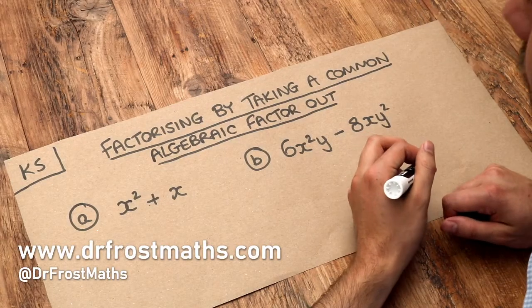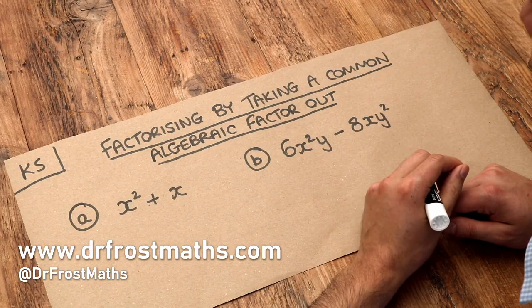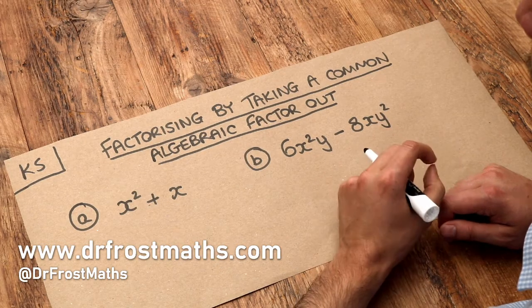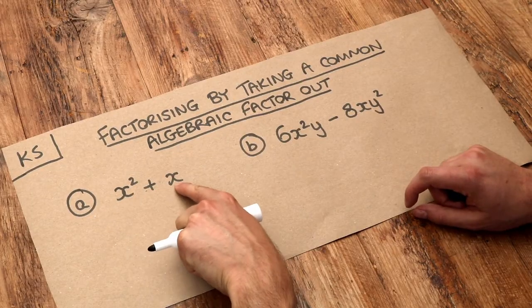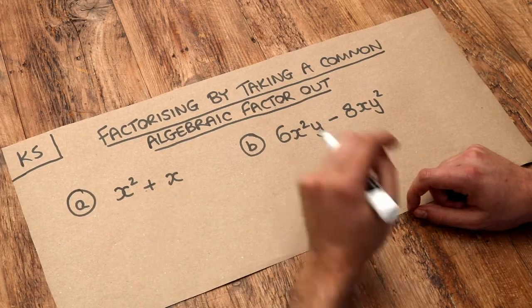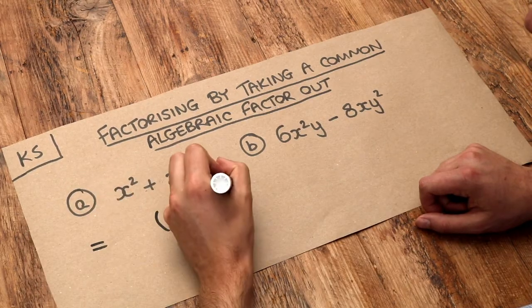Hello and welcome to this Dr Frost Maths key skill video on factorising by taking a common algebraic factor out. In the previous video we saw how we looked for a common factor between each of the terms in a sum or a subtraction and then we put that on front of a bracket.